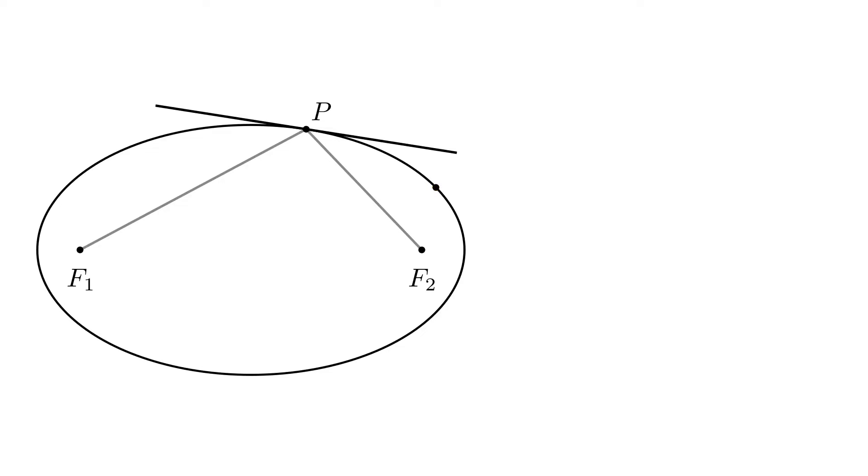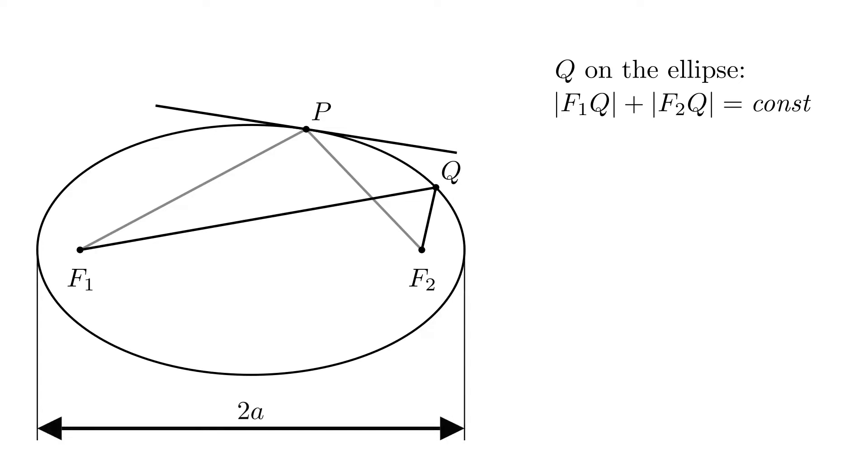For that, let's introduce another point which we'll call q. If q is on the ellipse, then f1q plus f2q is by the definition equal to some constant value. And in the previous video, we showed that that constant value is equal to 2a.